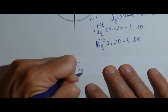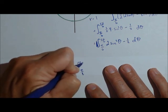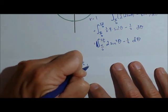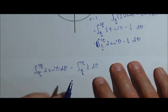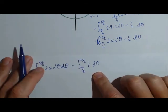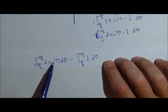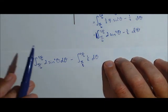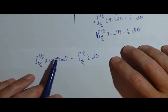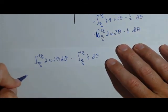Minus the integral from pi over 6 to 5 pi over 6 of 1 half d theta. This one will be pretty quick, it's just a constant. This one, we're going to do a substitution for sine squared theta. You can also use tables of integrals, I just want to show you another way of doing it.